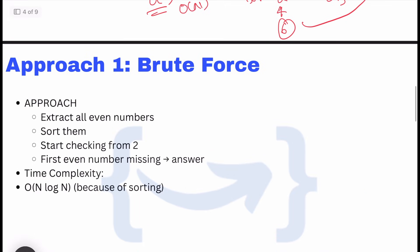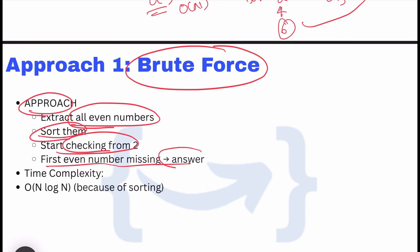Let's discuss brute force approach: extract all even numbers, sort them, start checking from 2, and the first even number missing is your answer. If an array has 6, 2, 4, 8, 10, you extract all even numbers, sort them, then check for every value: 2, 4, 6. Whatever element we don't have, we directly return.